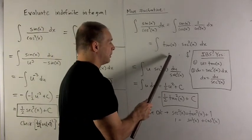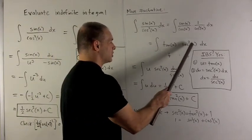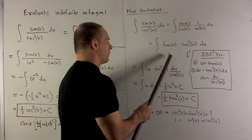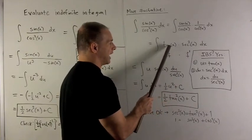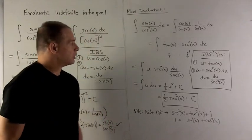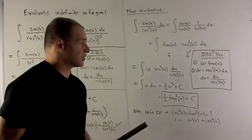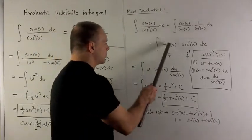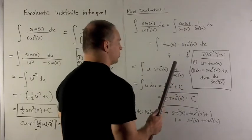One thing we notice: tangent, if I let that be my function, secant squared will be the derivative of my f. So the derivative of tangent is secant squared. The point I'm trying to make is, right off the bat, this doesn't look like an integration by substitution.